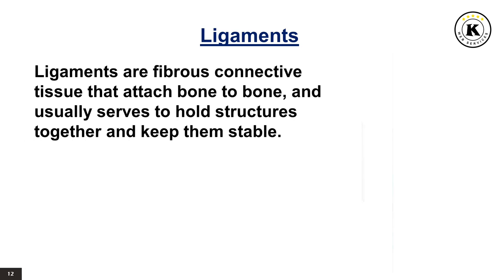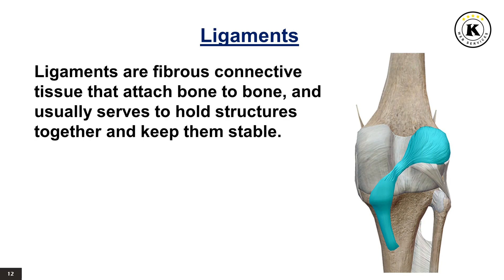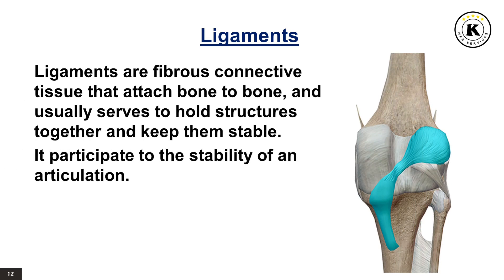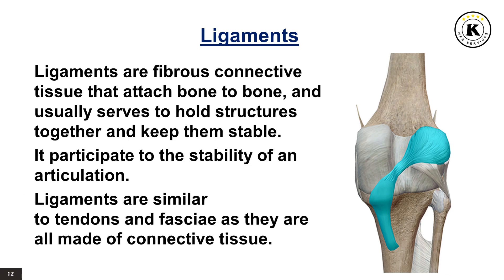Ligaments. Ligaments are fibrous connective tissue that attach bone to bone, and usually serve to hold structures together and keep them stable. They participate in the stability of an articulation. Ligaments connect one bone to another bone, tendons connect muscle to bone, and fasciae connect muscles to other muscles. These are all found in the skeletal system of the human body.